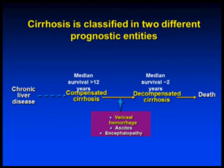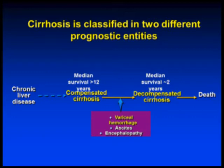Just to set ourselves up in the natural history of cirrhosis: any chronic liver disease will lead to cirrhosis. What I want to stress in this lecture is that we are at a stage where we have to stratify patients with variceal hemorrhage, and different therapies will probably apply to different patients. At the very least, is this patient compensated or decompensated? Decompensation is defined by clinical complications: variceal hemorrhage, ascites, and encephalopathy.